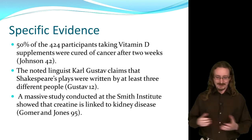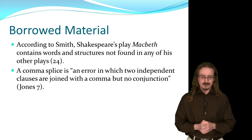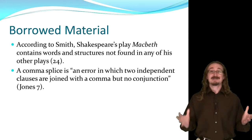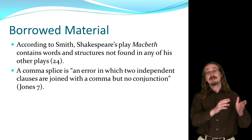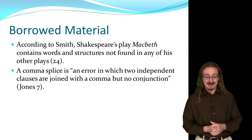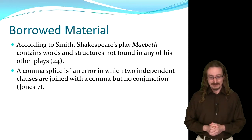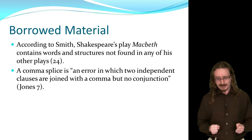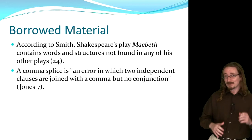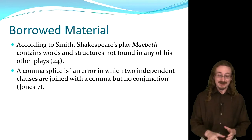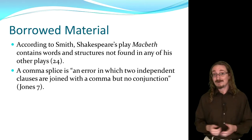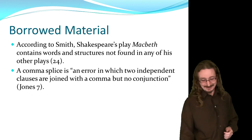Here's some borrowed material. 'According to Smith, Shakespeare's play Macbeth contains words and structures not found in any of his other plays.' There are reasons to cite this beyond just avoiding plagiarism — I need to show that I've done some research and found this article by someone named Smith. It makes me look more credible. Another example: 'A comma splice is an error in which two independent clauses are joined with a comma but no conjunction.' Most people probably don't know that right off the top of their heads, so if you just saw this sentence somewhere, you'd think you must have gotten it from somewhere — source: Jones.